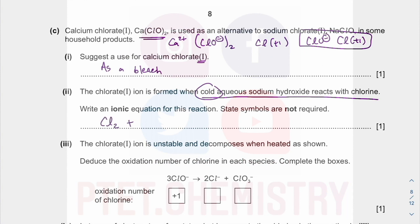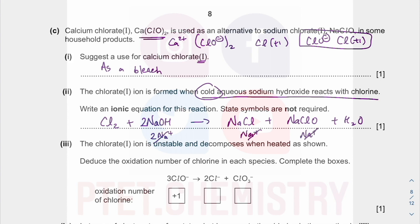I'll start by writing out the actual equation first. It gives you NaCl, NaClO, and water. You need to balance: two chlorine atoms — one in NaCl and one in NaClO — and two sodium atoms. The Na+ ions are spectator ions, so you can cancel them out, leaving you with: 2OH⁻ + Cl2 → Cl⁻ + ClO⁻ + H2O. Those are the spectator ions — you can cancel them out because they are soluble.